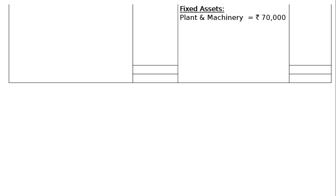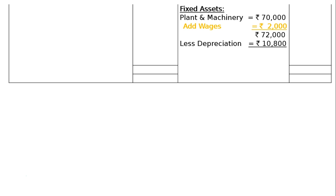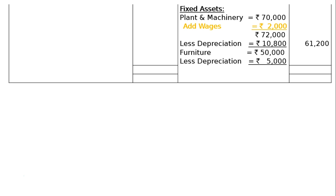Fixed assets: plant and machinery rupees 70,000, add installation wages rupees 2,000 — because installation wages were included in manufacturing wages, deducted in the trading account and added to plant and machinery — totalling rupees 72,000. Less depreciation 15 percent equals rupees 10,800. Final column: rupees 61,200. Furniture rupees 50,000 less depreciation 10 percent rupees 5,000 — final column rupees 45,000. The balance sheet totals on both sides: rupees 5,11,997.